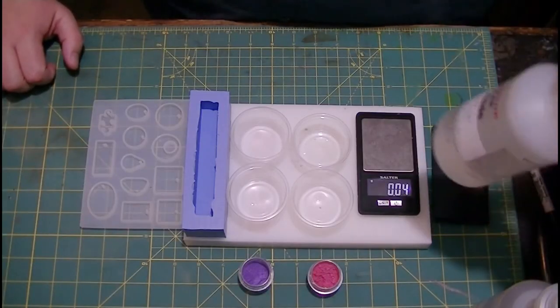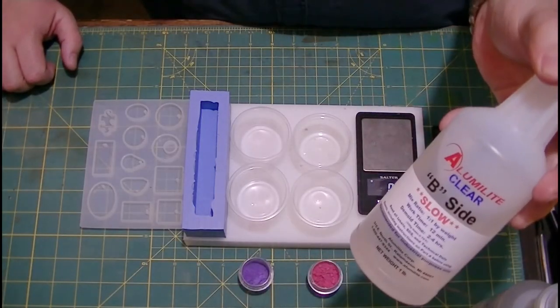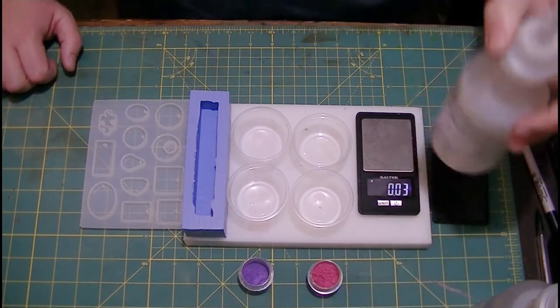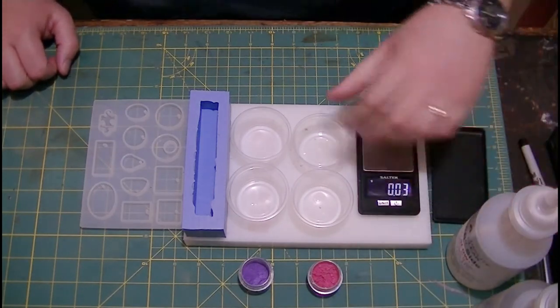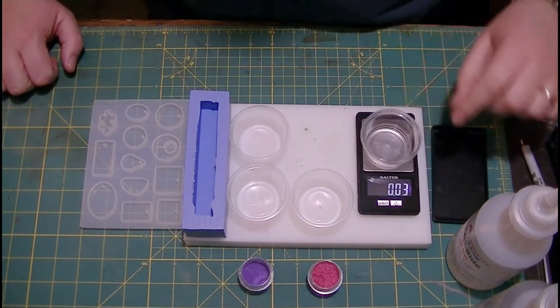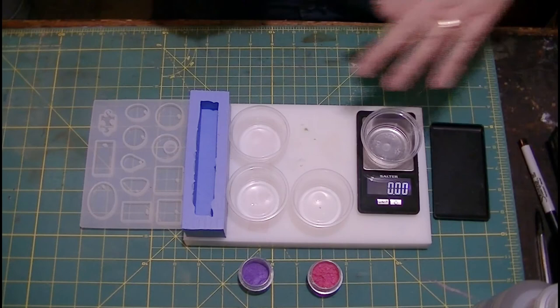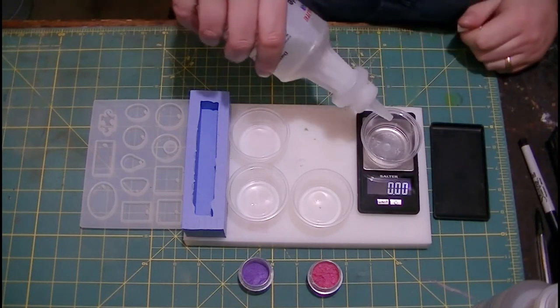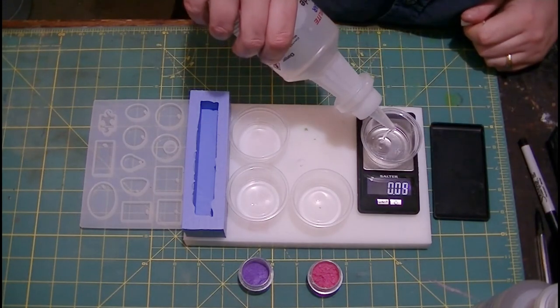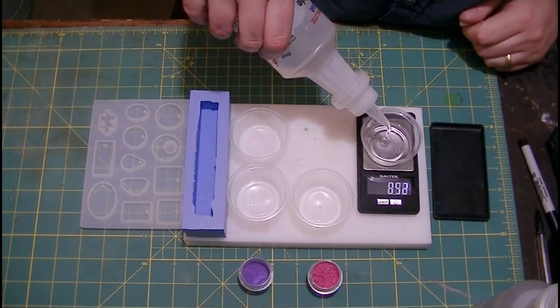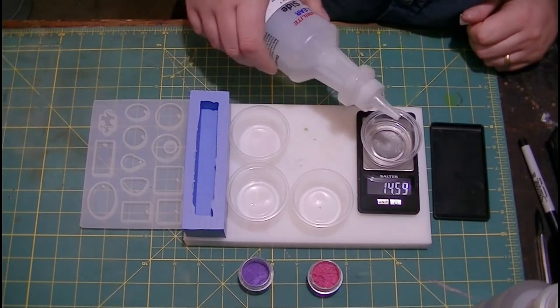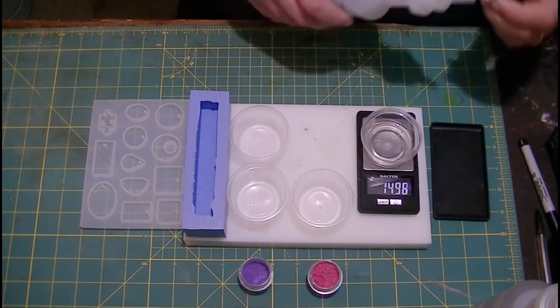Okay today we're gonna be using slow cast clear instead of just the standard. It's gonna be a little more time plus I'm kind of low on the standard at the moment. And so we will get 60 grams measured out here. So we're gonna put 15 in each cup and that's going to be a total of 60 grams which is what size our silicone mold is that I made. There we go. Close enough.